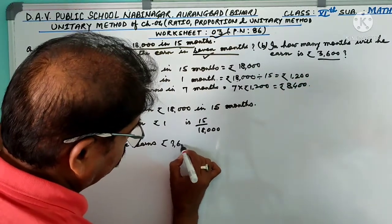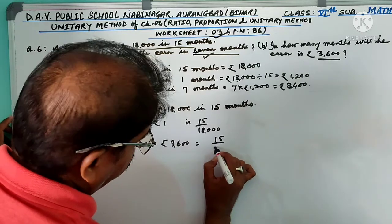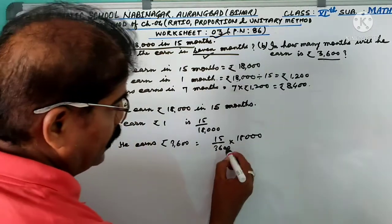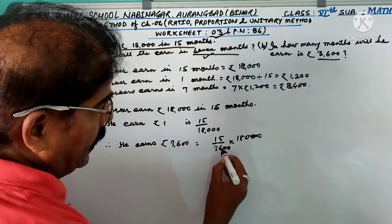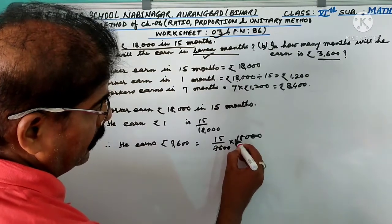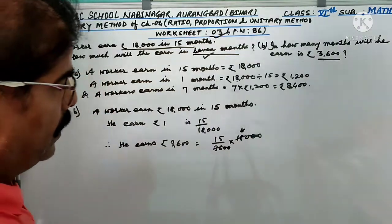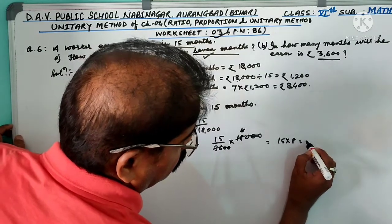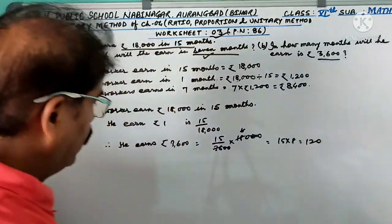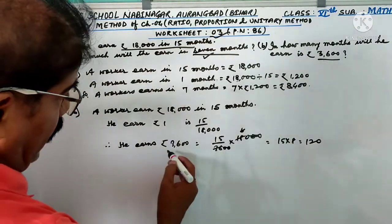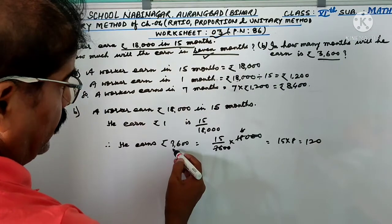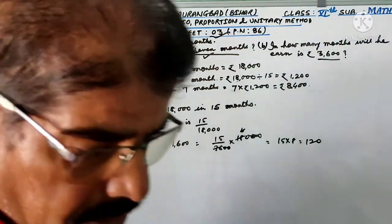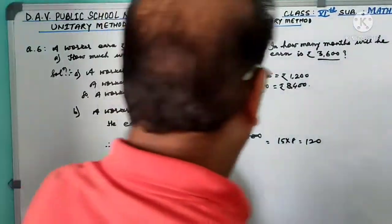Therefore, he earned Rs 3,600 equal to 15 by 18,000 into 3,600. 2 zeros cancel, and 36. I have done 180. So 15 into 8, 120. So he earned. Sorry, he earned 3,600. So this is the solution.